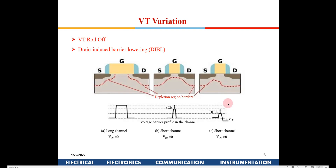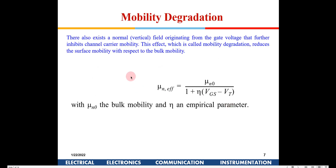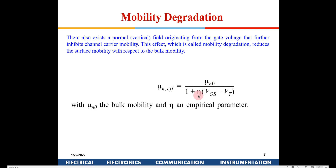Another short channel effect is mobility degradation. For large channel devices, the vertical electric field does not really matter, but for short channel devices, the vertical field also starts affecting the electrons moving between source and drain. This vertical field decreases mobility. The higher the VGS you apply, the more the mobility degrades. This is described by an empirical formula where the effective mobility mu_eff is slightly less than mu_n0.